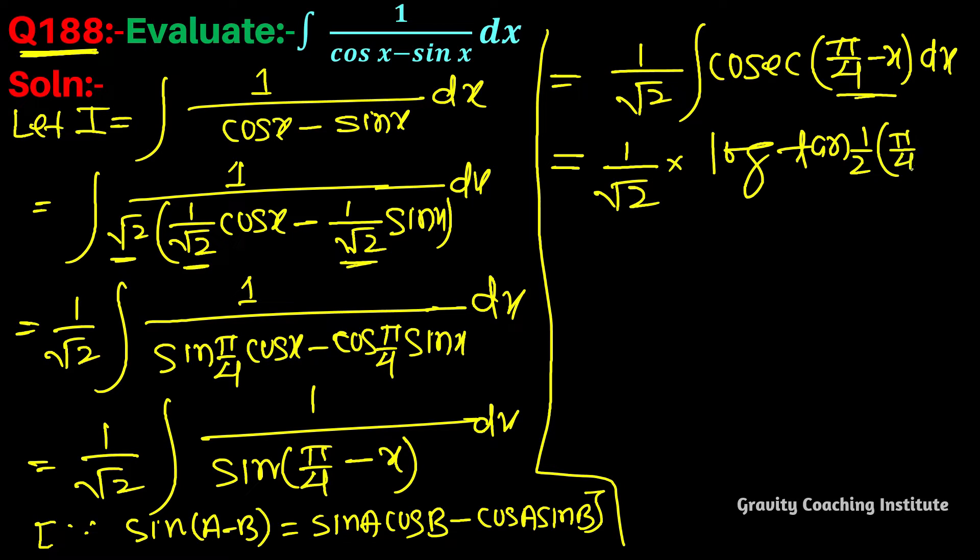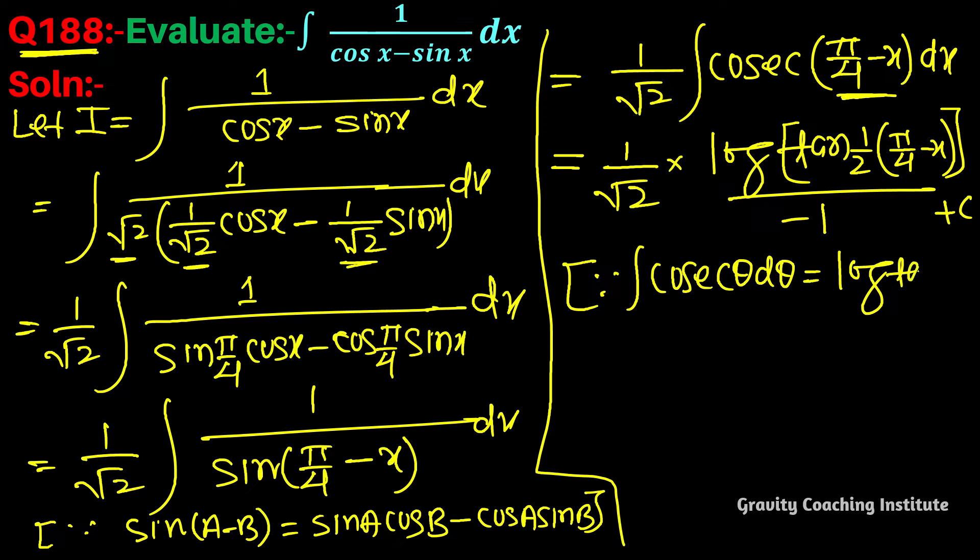pi by 4 minus x, and the coefficient of x is minus 1. Here we have used the formula: integration cosec theta d theta. The formula for cosec theta is log tan theta by 2.